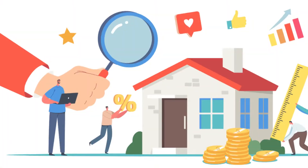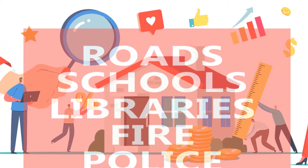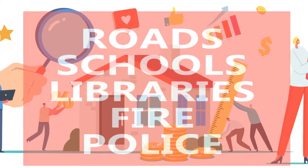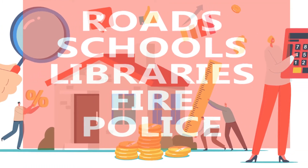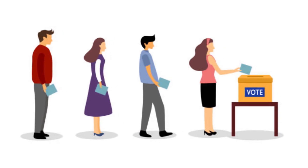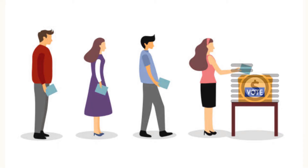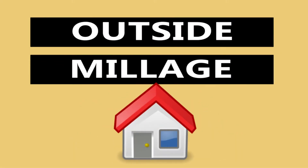In addition to the base rate, voters can approve funds for roads, schools, libraries, fire and police protection, and other governmental services. This millage, outside of the 10 mills, must be voted on and approved before being added to the property tax calculation. These voted mills are sometimes called outside millage.